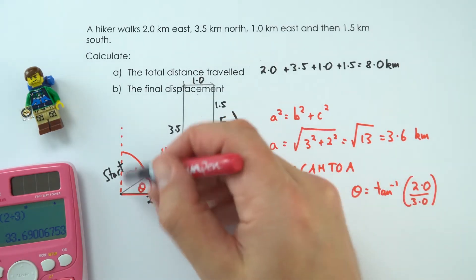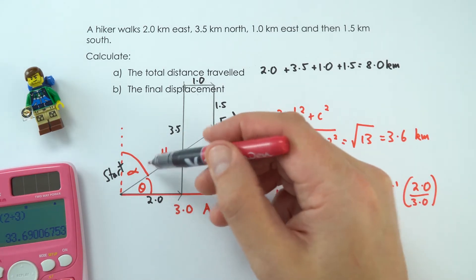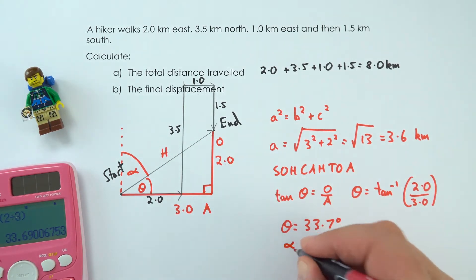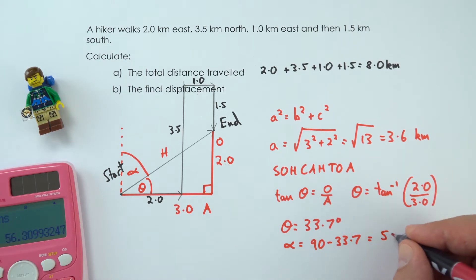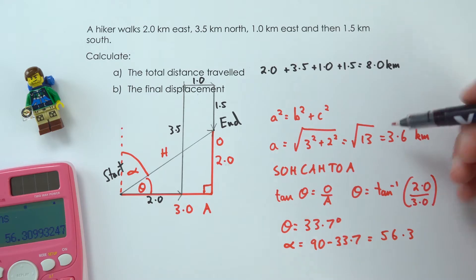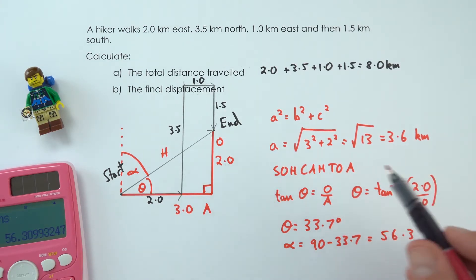If this is a right angle and that's 33.7, the angle alpha that we're interested in is going to be equal to 90 minus 33.7, which is 56.3. Like my raw data, I can give this to two significant figures, and therefore I can say that the angle is going to be equal to a bearing of 056 degrees.